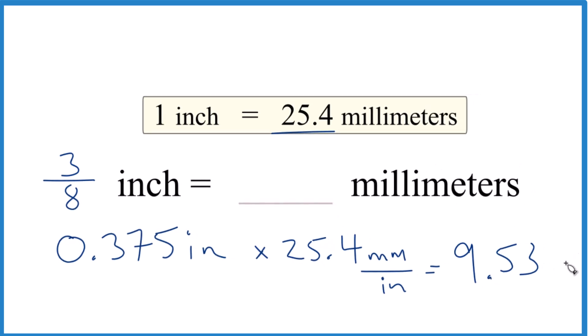Since we multiplied, we're going to have millimeters as our answer, and you can even check that because we have inches on top and inches on the bottom, we can just cancel those out, left with millimeters. So we know we did that correctly.